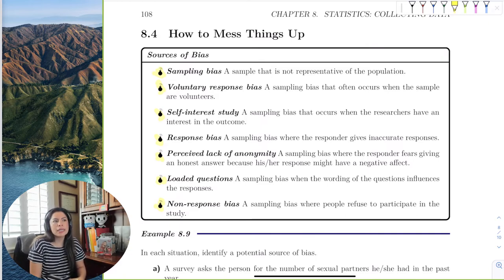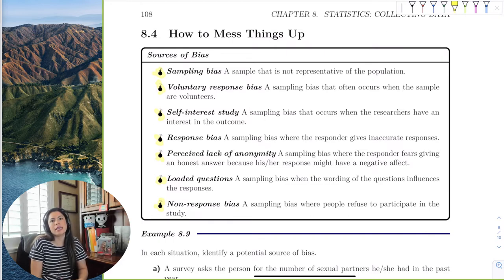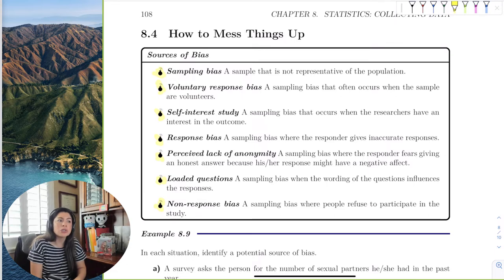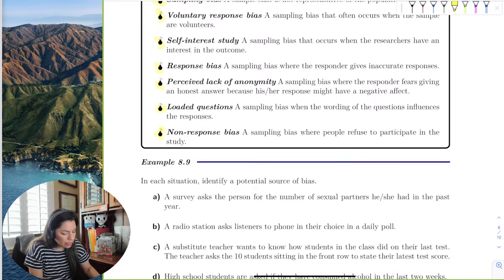Loaded questions—that's when so many things are being asked that it gets confusing for the subject to answer and the researchers to aggregate information from. Non-response bias just means that people don't participate. You send out a survey, you think you're going to get voluntary response, and you get nothing.